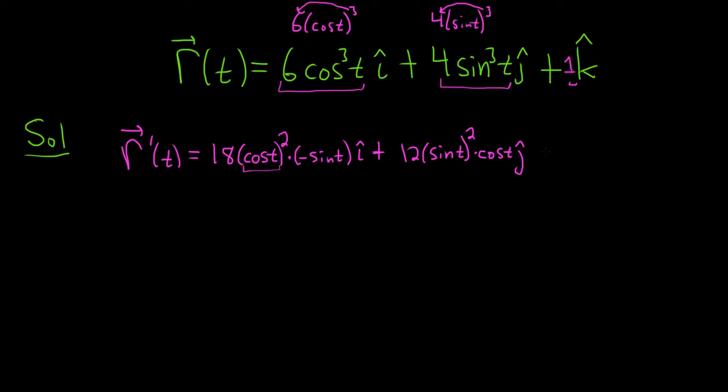There's a 1 here in front of the k hat. So when we take its derivative, we simply get 0. So we have 0 k hat. So you have a choice here. You can not write it, or you can write it. It's up to you.